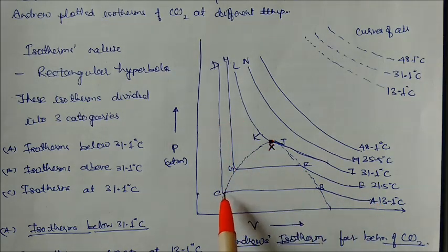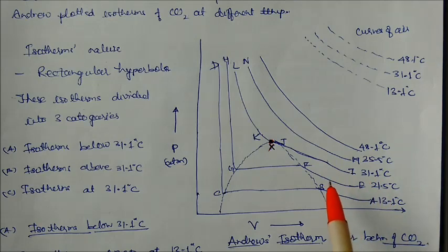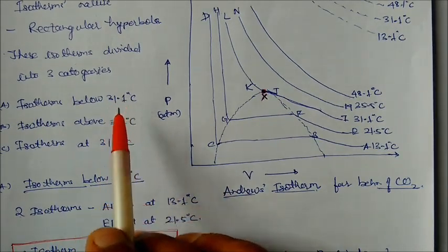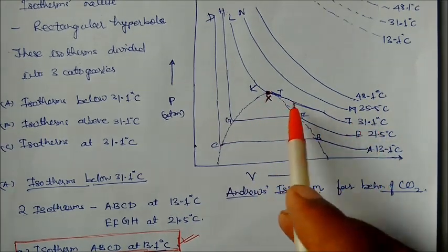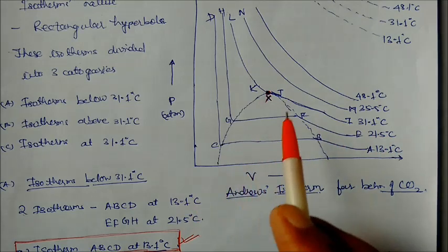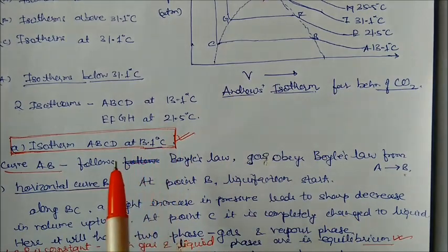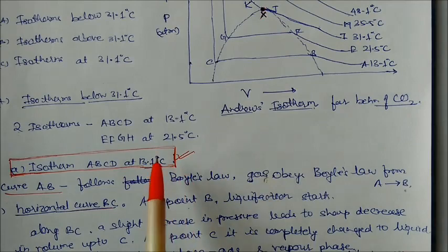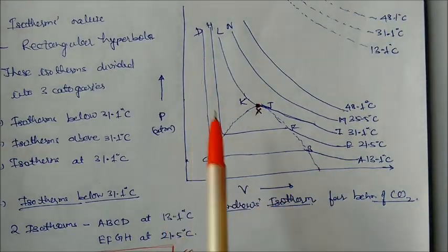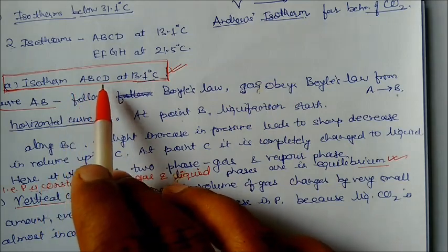Some curves also develop a vertical line portion. These horizontal and vertical sections indicate what happens to carbon dioxide at different temperatures. The curves are divided into three categories: isotherms below 31.1°C, the isotherm at 31.1°C, and isotherms above 31.1°C. Let us first examine the isotherms below 31.1°C, specifically the isotherm ABCD at 13.1°C and EFGH at 21.5°C.